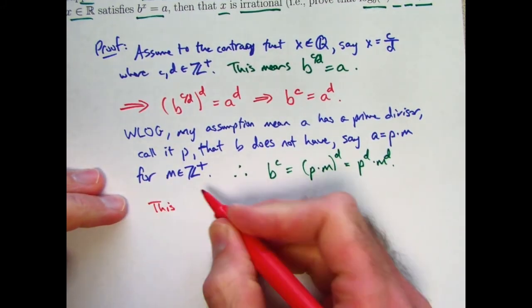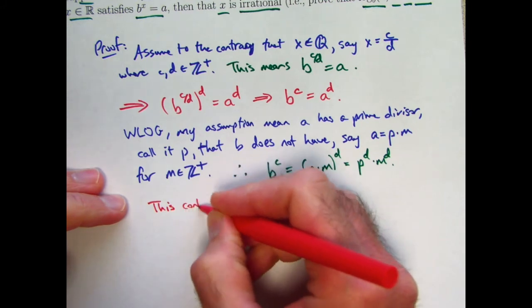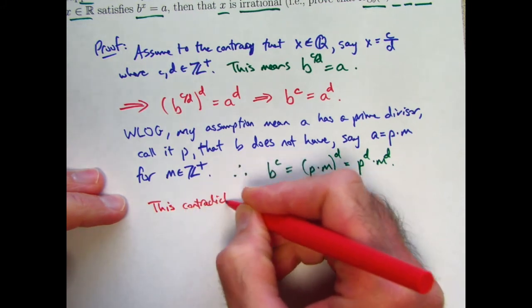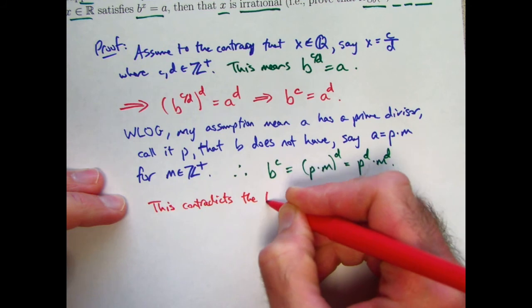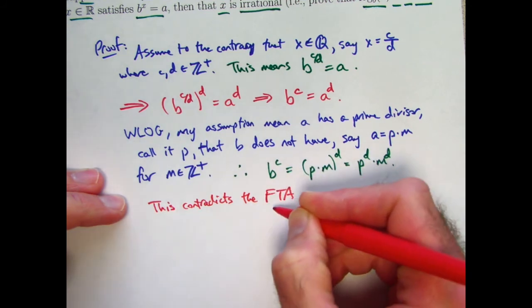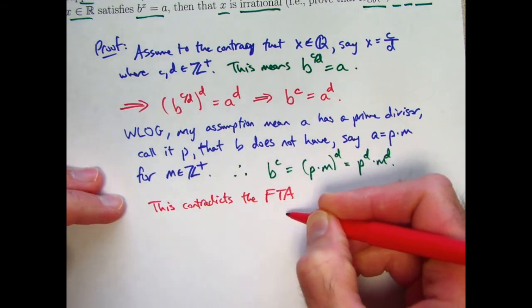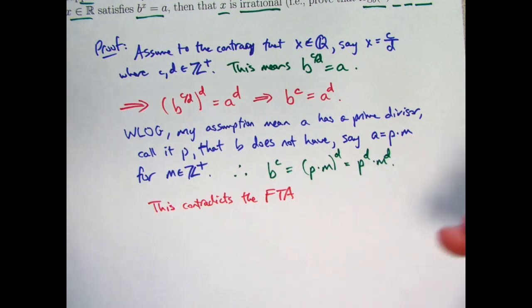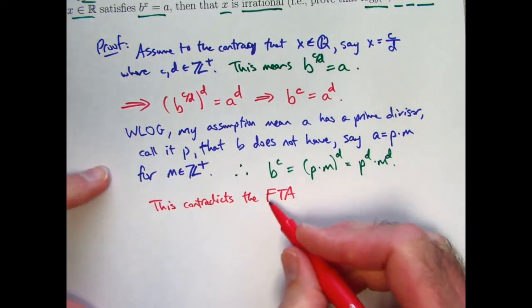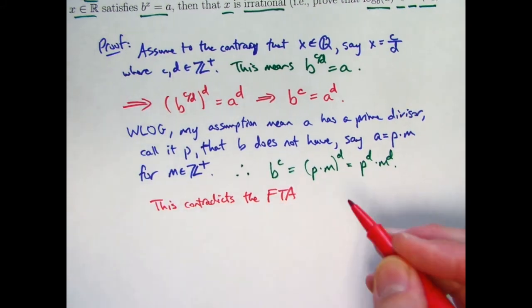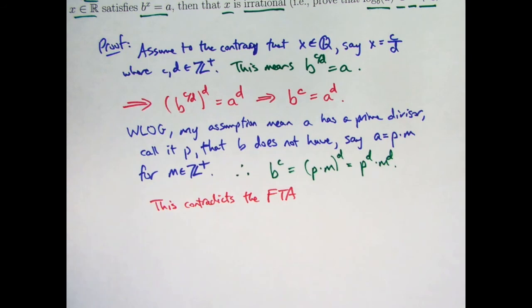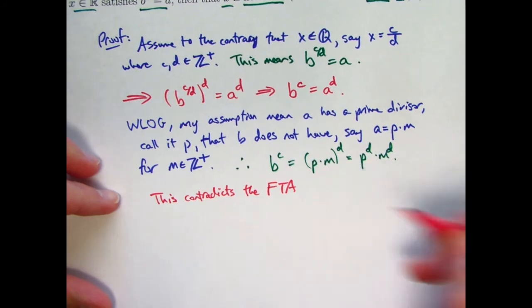What does this contradict? This contradicts, if you want to be technical about it, the FTA, this standing for Fundamental Theorem of Arithmetic. FTA could also stand for Fundamental Theorem of Algebra, which is about roots and polynomials, but that's not what we're talking about here. We're talking about the Fundamental Theorem of Arithmetic. Maybe you want to write that out completely. Basically, unique prime factorization of positive integers up to orders of the factors. This contradicts that.